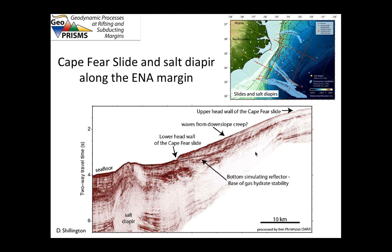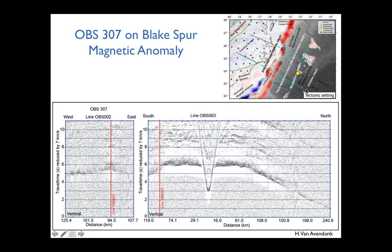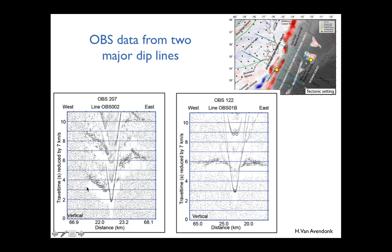Looking at OBS data — OBS 307, located along the Blake Spur Magnetic Anomaly, shows the structure in data reduced to 7 km/s. The data are of very high quality with arrivals out to long distances. Two OBSs from the major deep lines show a pretty dramatic change in structure along Profile 2 to the south. OBS along Profile 1 shows structure on the oceanic crust.